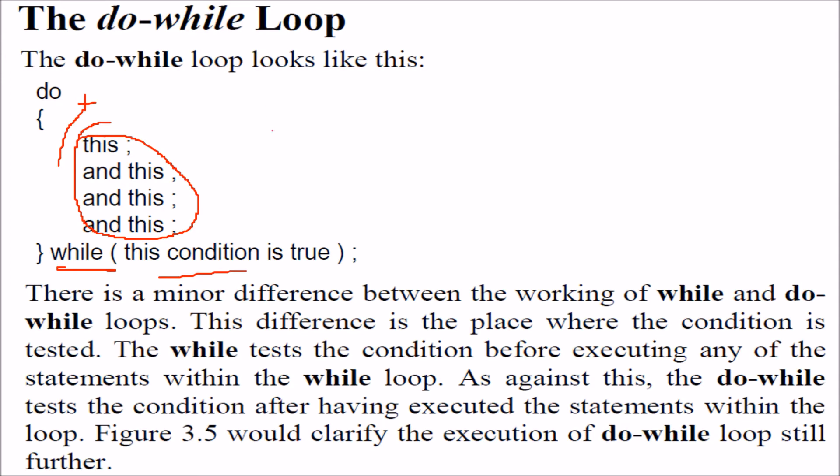There is just a minor difference between while and do while and for actually. For and while are entry control loops. If the condition is false for the first time, you are not able to enter, you will not be allowed to enter. But in do while, you are able to enter for the first time even if the condition is false.